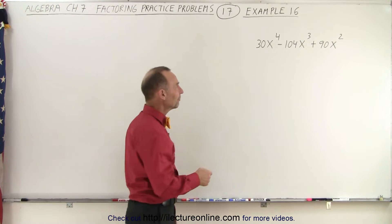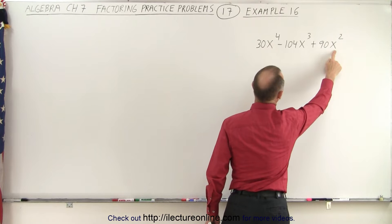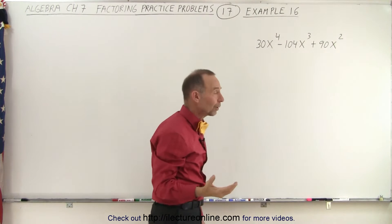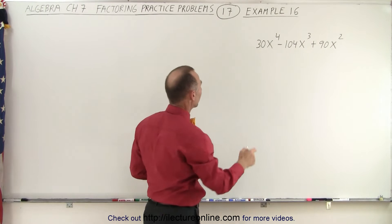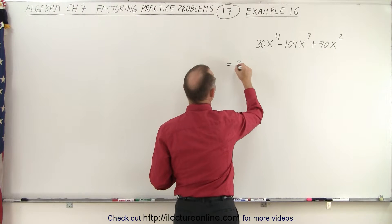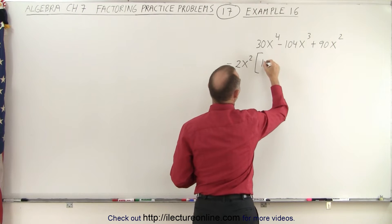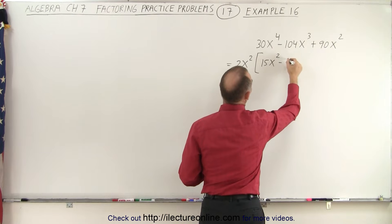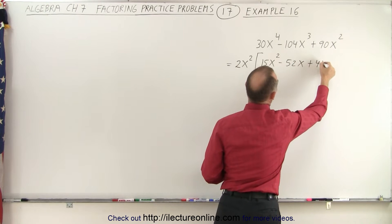But first of all, let's see if we can factor out some common factors. Notice we can factor out an x squared, and they're all even, so at the very least we can factor out a 2. Let's do that and see what we end up with. So this becomes equal to 2 times x squared as a common factor. That leaves us with 15x squared minus 52x plus 45.